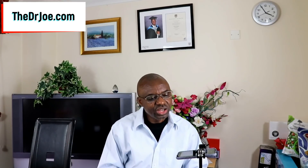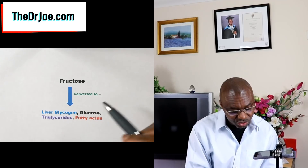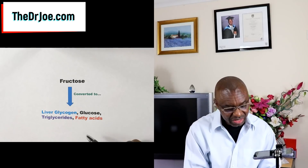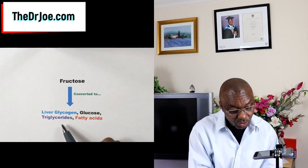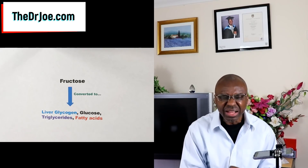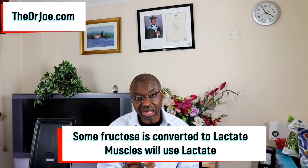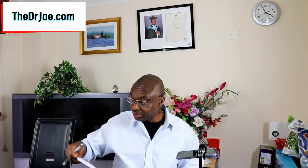So what does the liver do with fructose? The liver will convert fructose to glycogen, which is stored in the liver. It will also convert fructose to glucose. The liver will additionally convert fructose to triglycerides and fatty acids. And some of it is also converted to lactate, which the muscles will happily use. That is what the liver does with fructose.